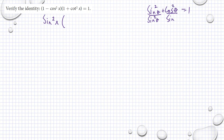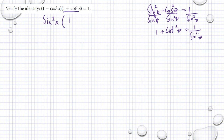It should be squared, or else it's wrong. Then this will become 1 plus cotangent squared theta, is equal to 1 divided by sine squared theta. And that is equal to 1 divided by sine squared theta, so it should be 1 is equal to 1.